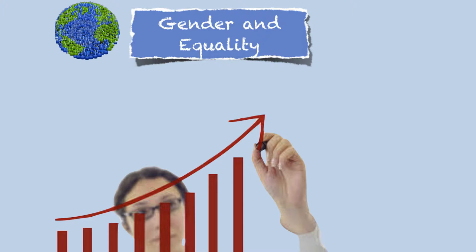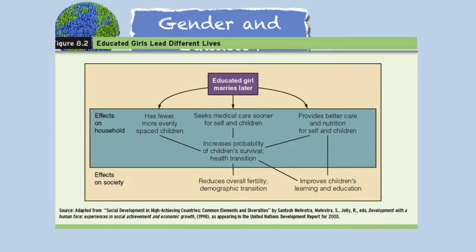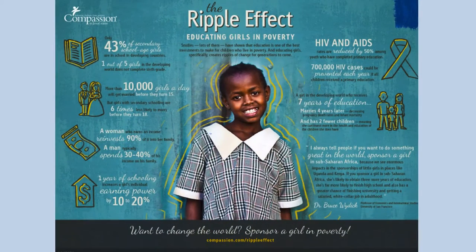With girls' education comes other benefits. When girls are educated, they tend to marry later, which has many effects on the household and on society overall. Girls with better education marry later, have fewer children, there's lower maternal mortality, and they bring in much more needed income. There's a ripple effect from educating girls who live in low-income circumstances — you can pause and look at the graphic in the video for more detail.